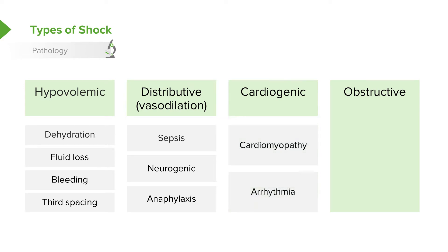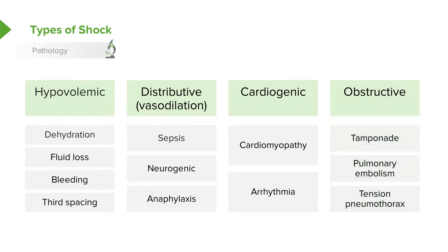Cardiogenic shock is when the heart is primarily involved. This can happen, for example, in patients with a bad cardiomyopathy or in patients with arrhythmias. Obstructive shock is when the heart is working but just can't get the blood out. Examples would be tamponade, pulmonary embolism, or a tension pneumothorax.